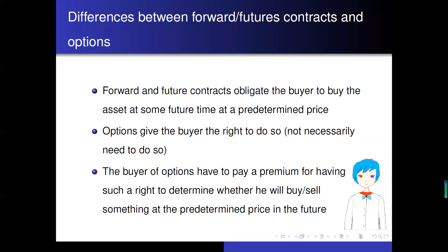Since options only give the right for the buyer to do something, the buyer of the options has to pay a premium for having such a right — to determine whether they will buy or sell something at a predetermined price in the future. So forward and futures contracts have low value when they are set up, but options have a value, which is the upfront premium the buyer of the option paid to the other party.